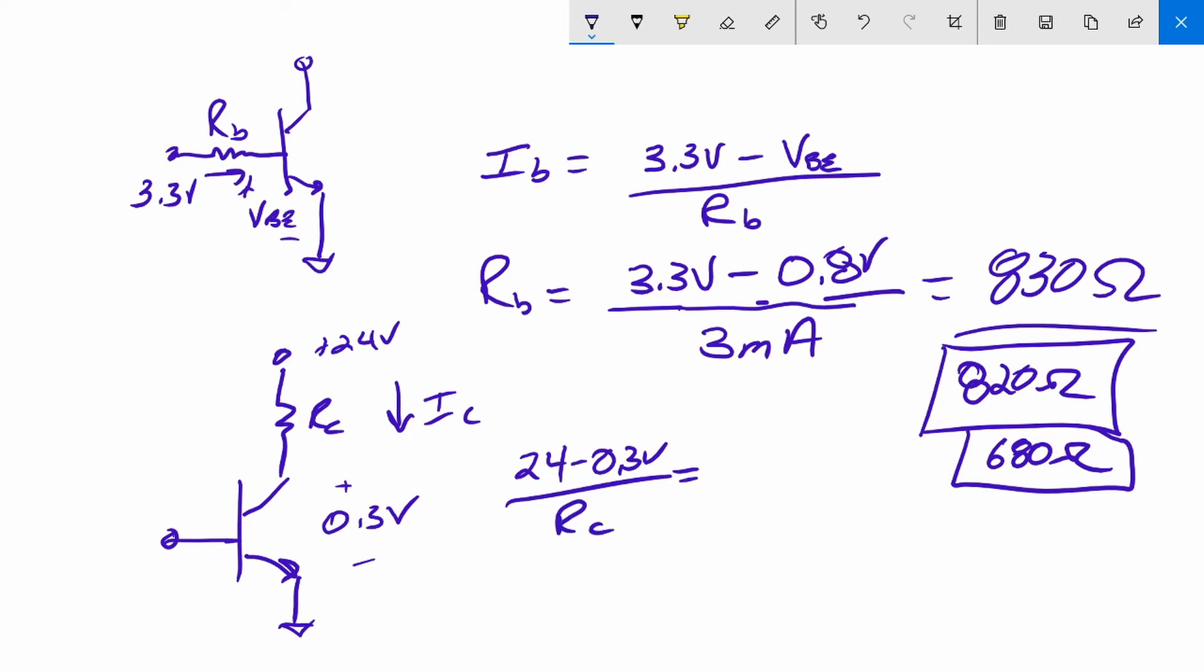And if you go back to the data sheet, there's a 10 to 1 mapping between the base current and collector current when the device is in saturation. So I'm going to assume this is 30 milliamps. And if we solve that, we see that R_C is about 790 ohms.